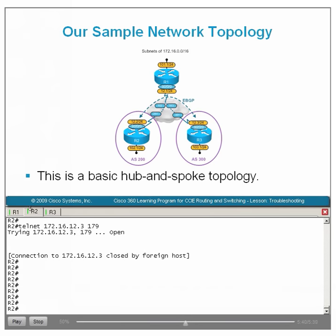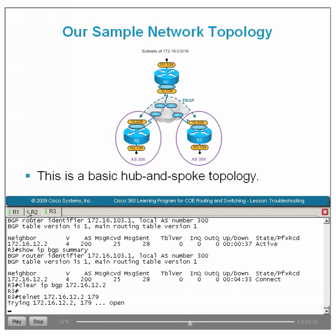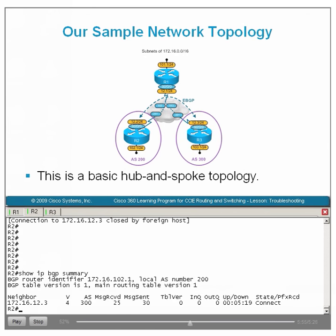After clearing the neighbor relationship and telnetting from R3 to 172.16.12.2 port 179, R2 now maintains the BGP connect state. These tests were successful — we were able to move our BGP peering relationship from active to connect. This telnet test indicates that the BGP processes are fully operational on both ends. Therefore, we can assume the problem does not lie in the BGP processes themselves, but in the transmission of the packets between the two BGP peers.